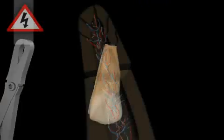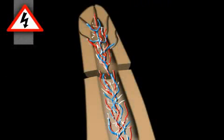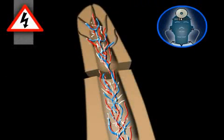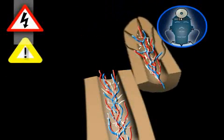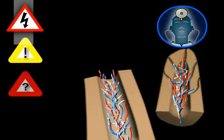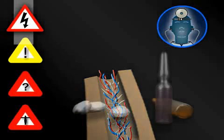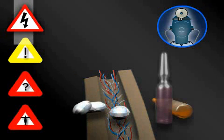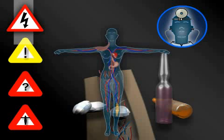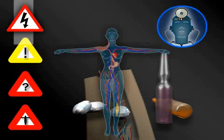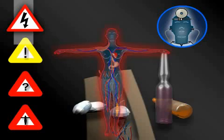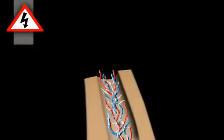The risks associated with root tip resection are negligible if it's performed by an experienced surgeon. However, there can be complications in isolated cases that may require additional measures to be taken. Any additional measures that are required can then lead to further complications, and those can eventually be life-threatening. For our purposes we will only discuss root tip resection specific complications.